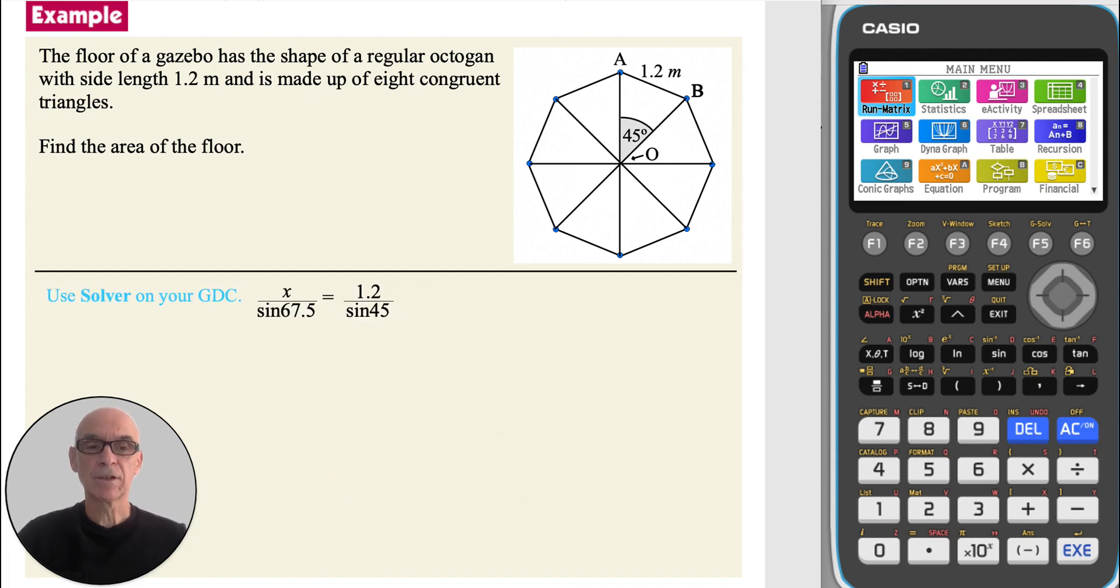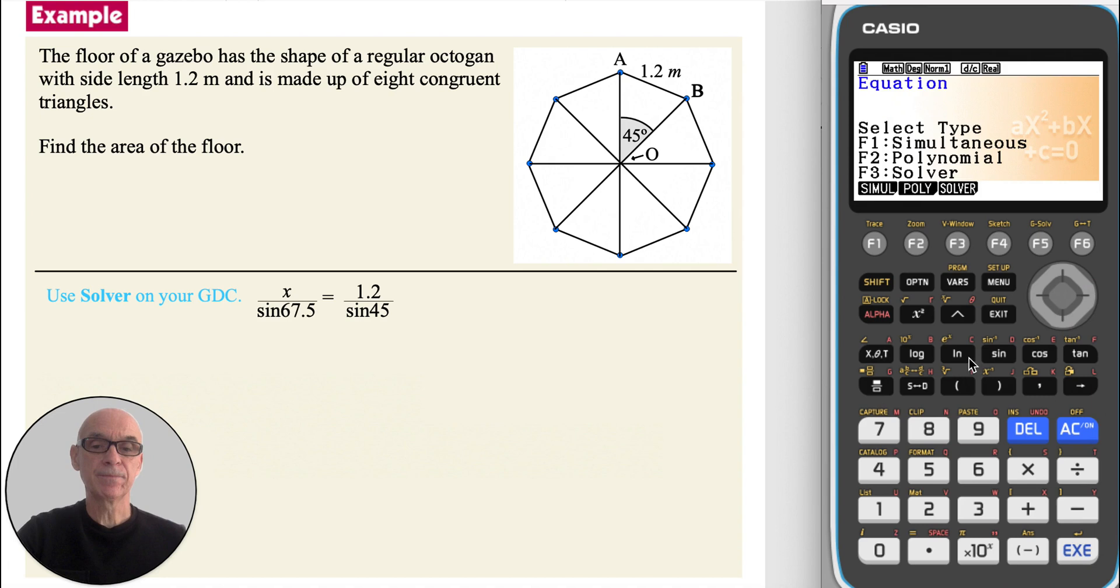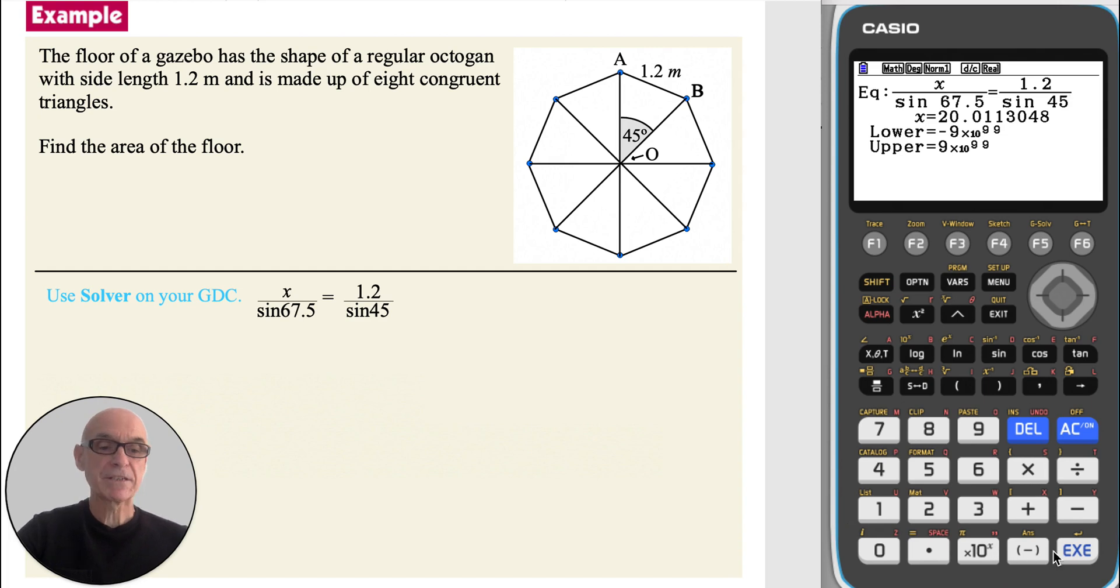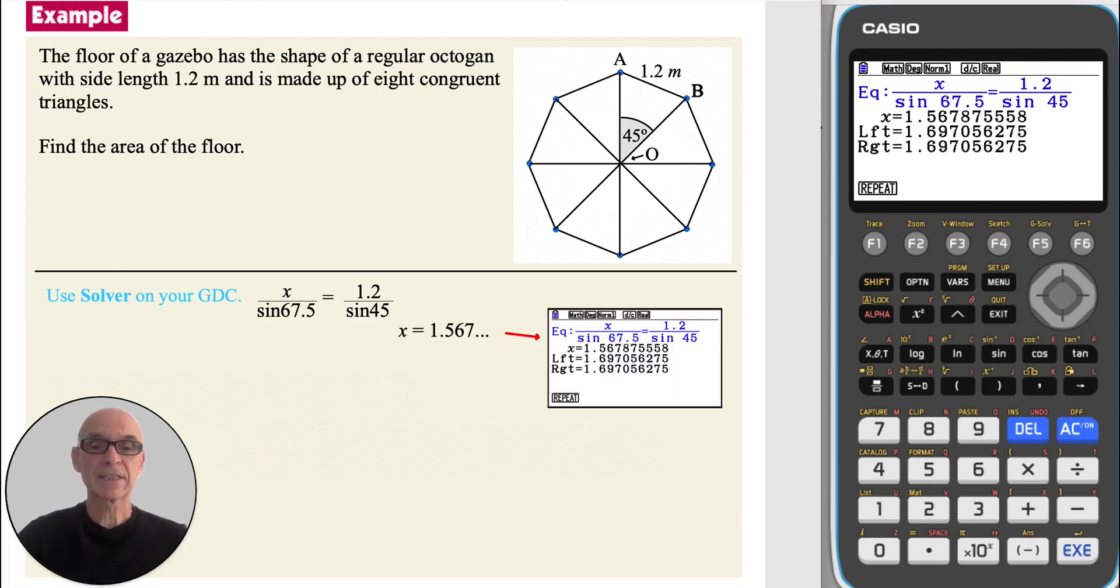And using solver to solve the equation. From the main menu, select equation. Press F3 for solver and type the equation in. Pressing the fraction button, the X variable button, and then the down cursor to get to the denominator. Pressing the sine button, 67.5. Pressing the right cursor to come back up. Pressing shift to access equals. The fraction button a second time. Entering 1.2 for the numerator, then the down cursor, and pressing the sine button and entering the angle of 45 degrees. Pressing execute to enter the equation and F6 to solve the equation.